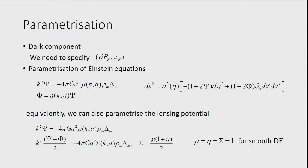You can combine these to get a different parameterization. Since lensing is determined by (phi + psi)/2, it is sometimes more useful to define the relation between the lensing potential and density perturbations. Sigma is just a combination of mu and eta. In this case, mu and sigma are the two functions describing the modification of gravity. What we are looking at is deviations from smooth dark energy — for smooth dark energy there are no corrections, so mu and sigma stay at one.